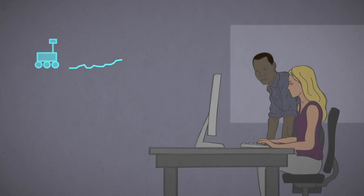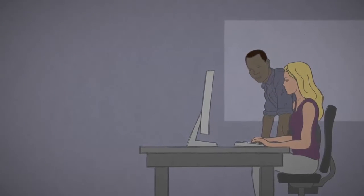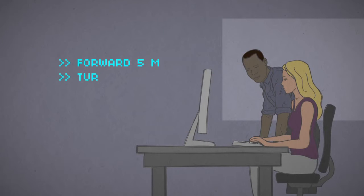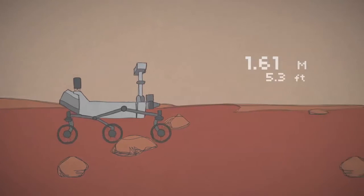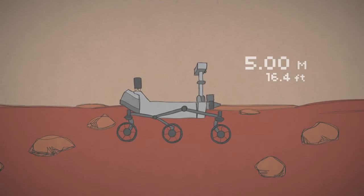Depending on how tricky the terrain is, rover drivers have two options. They can send a string of specific commands like drive forward 5 meters, then turn right 90 degrees. The rover turns its wheels enough times to add up to 5 meters, and then turns in place.